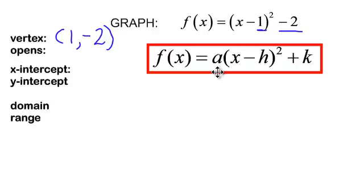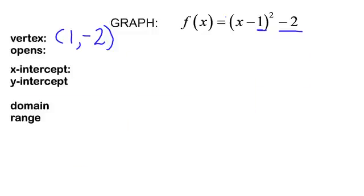I will be able to look at a, the coefficient in front, and if it's positive, my parabola will open up. If it's negative, it will open down. My a in this problem is a positive 1, so it does open up.